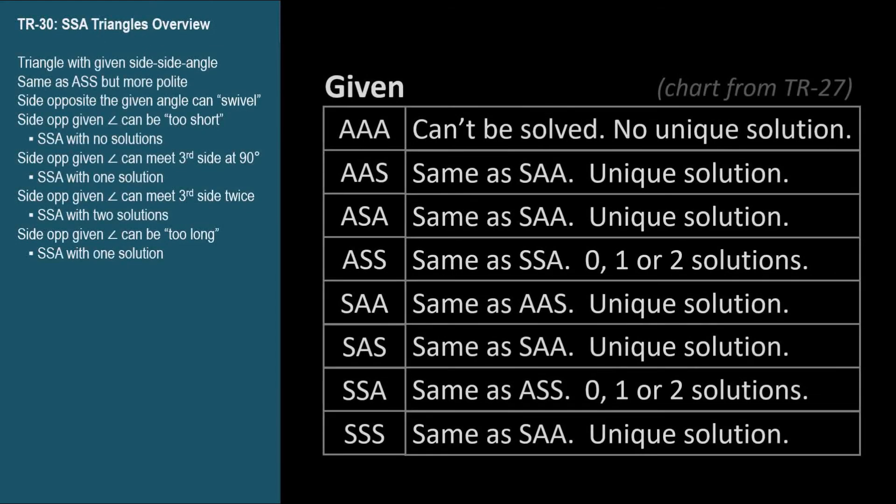Remember these eight categories of given conditions when solving triangles. See TR-27 for a review. They're all easy because the law of sines and the law of cosines are both easy.